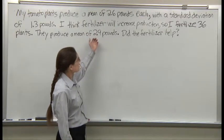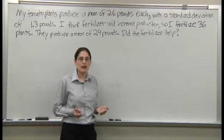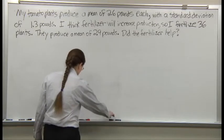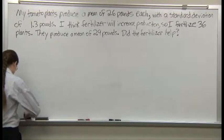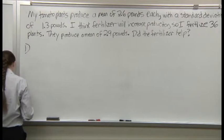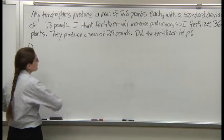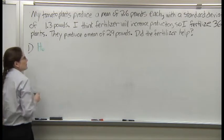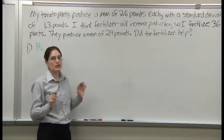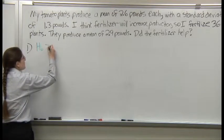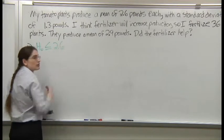It looks like it helped — it went from 2.6 to 2.9 — but was the jump big enough to mean something? The first step is to name the hypotheses. The null hypothesis is that it's just a coincidence; the fertilizer did nothing. The mean is still 2.6 or less.